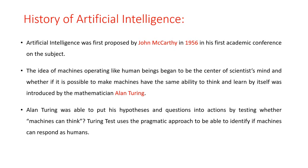The history of artificial intelligence: AI was first proposed by John McCarthy in 1956 at his first academic conference on the subject. The idea of machines operating like human beings — and whether it is possible to make machines think and learn by themselves — was introduced by mathematician Alan Turing. According to Alan Turing, he was able to put his hypothesis into action by testing whether a machine can think or not, using the Turing test, which uses a programmatic approach to identify if the machine can respond similarly to a human.